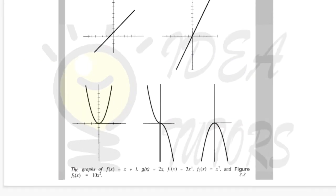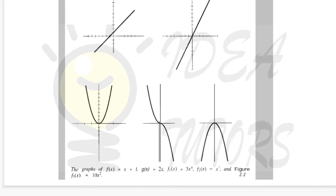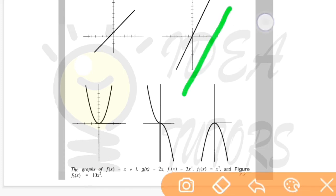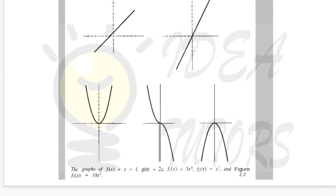These are some graphs of these functions. The first one is x + 1, which is an increasing function. Similarly, the second graph is 2x — if x is 1, f(x) is 2; if x is 2, f(x) is 4; if x is 3, f(x) is 6. This is an increasing function. We also have decreasing functions; for example, something like minus x to the power 7 is a decreasing function because as x increases, we get a lower number.